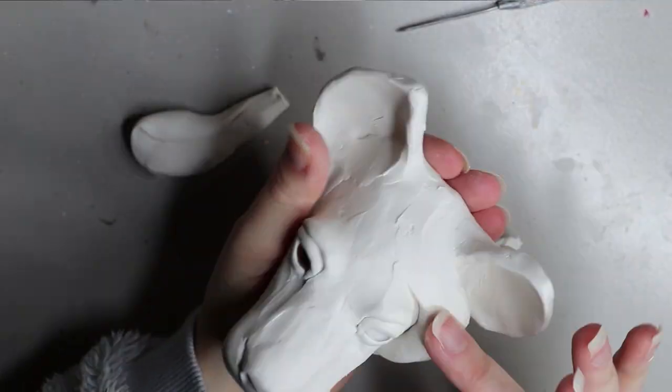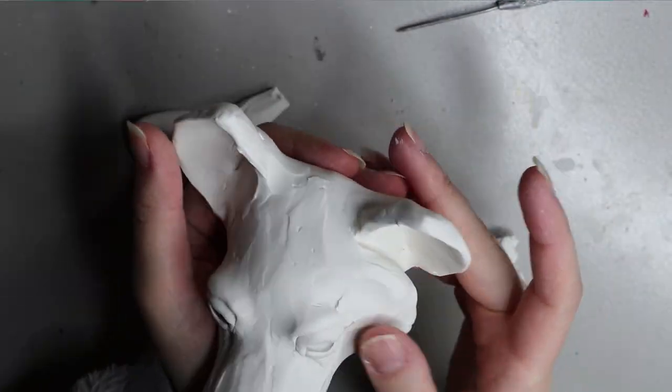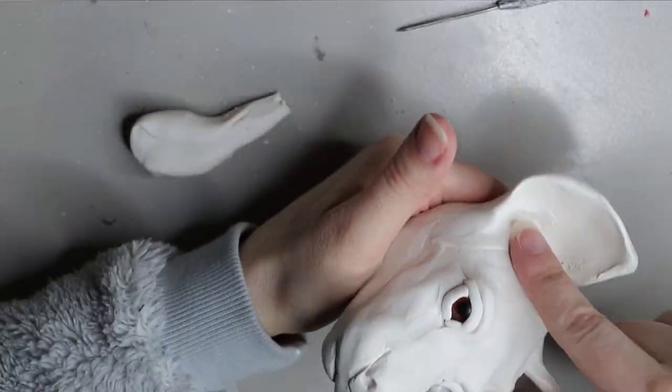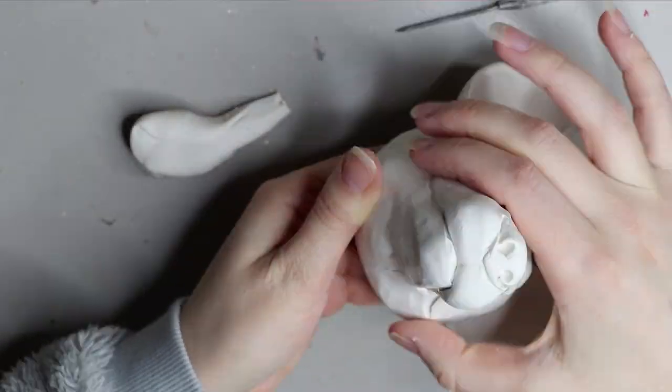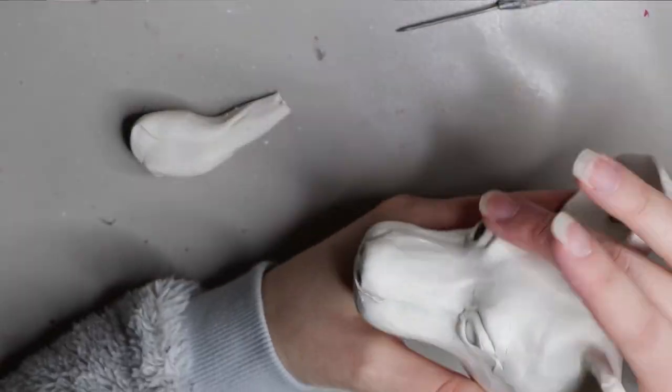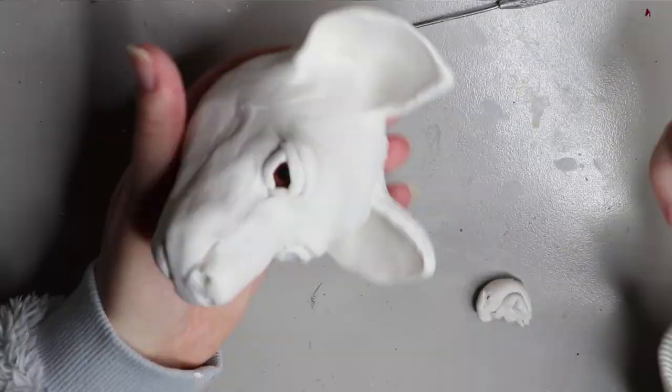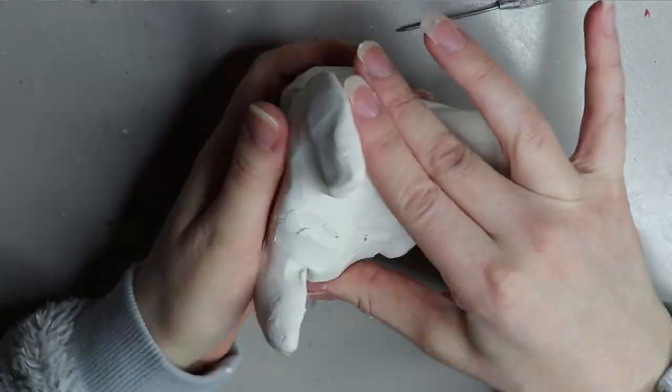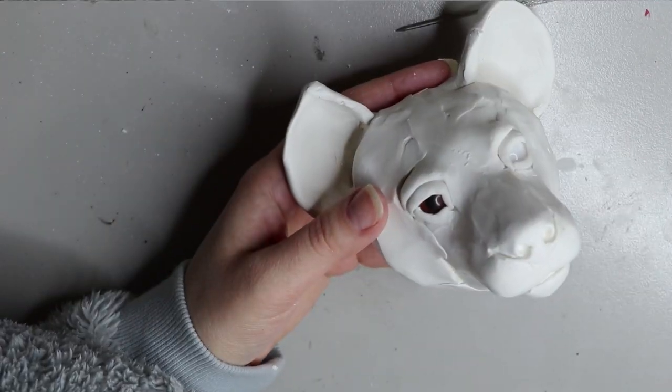At this point I thought my hyena was a bit way too thin so I wanted to bulk up the head a little bit. I'm just adding sort of sausages of clay around the back end of the head.